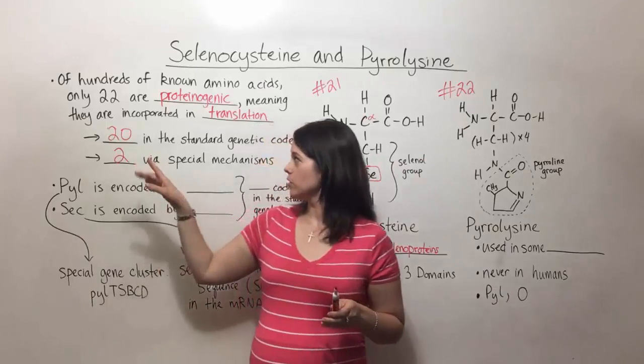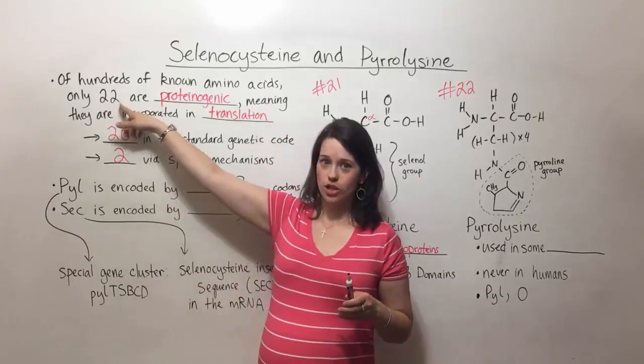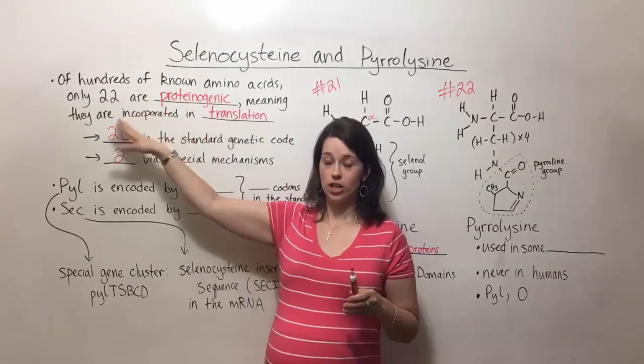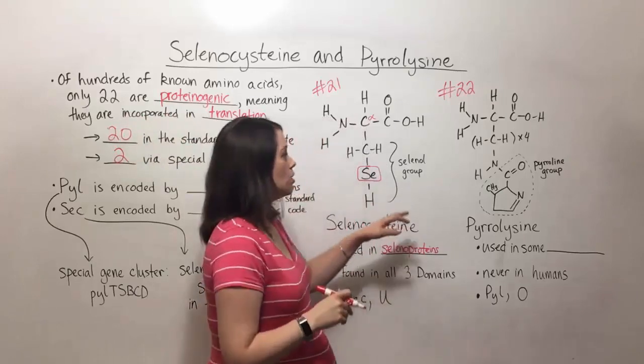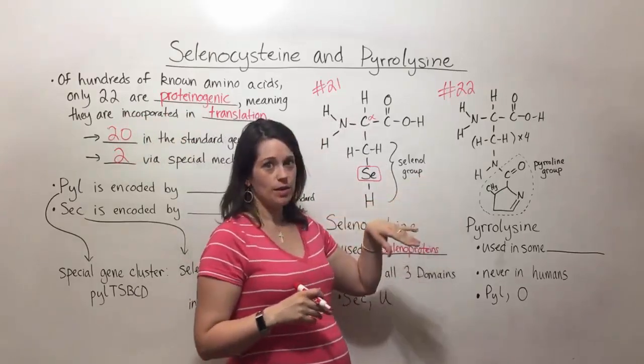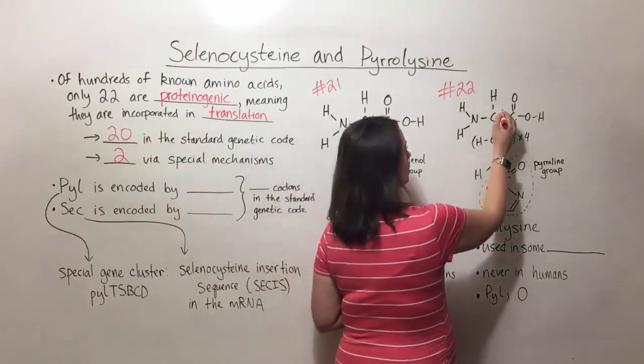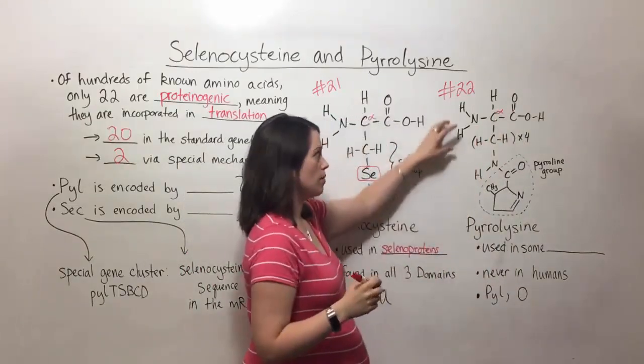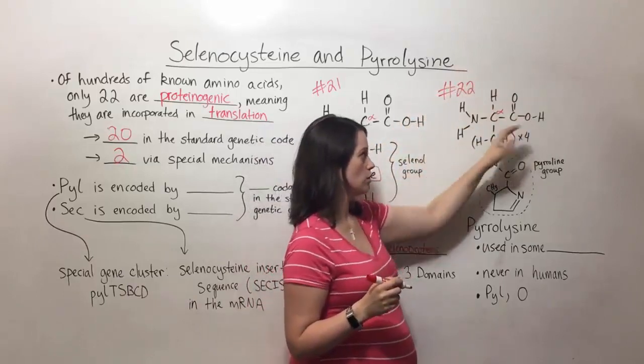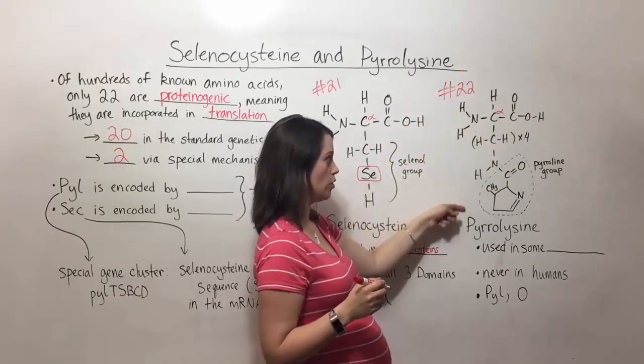And remember, we're talking about number 22 of these 22 proteinogenic amino acids. So this one right here is pyrolysine. You can see it's a little bit more complicated. We've still got our alpha carbon right there. The alpha carbon still has its amino group, its hydrogen, its carboxyl group. This right here is the R group.